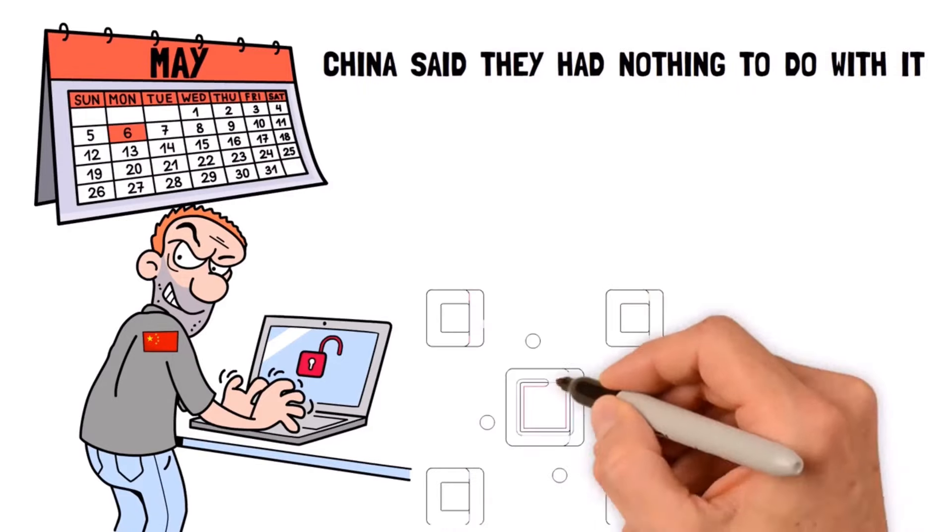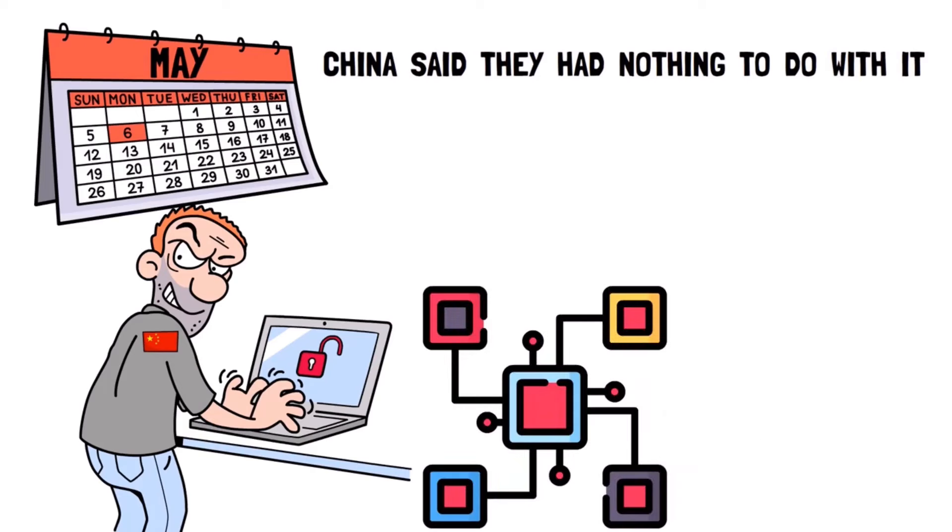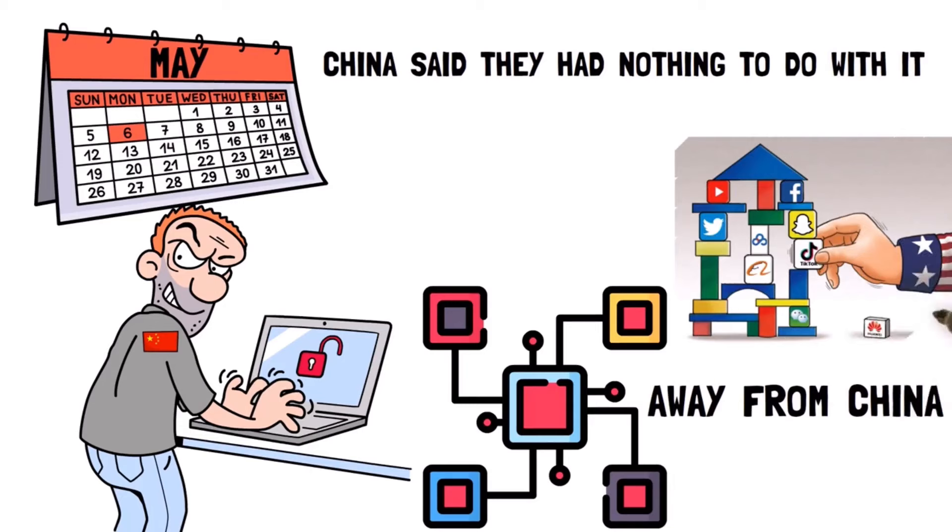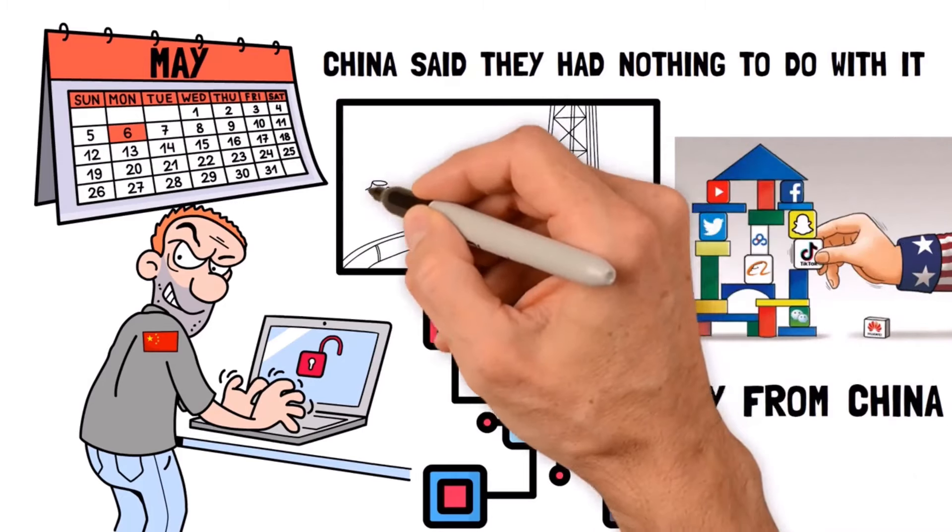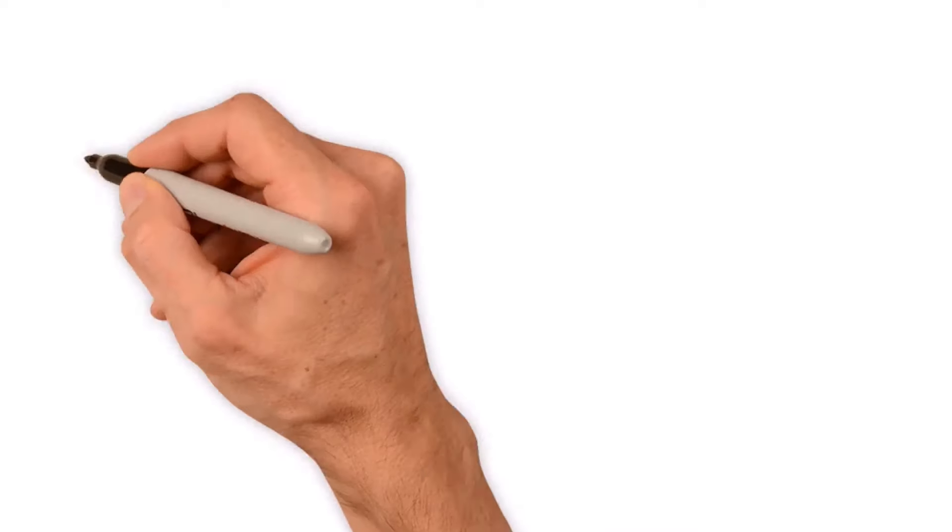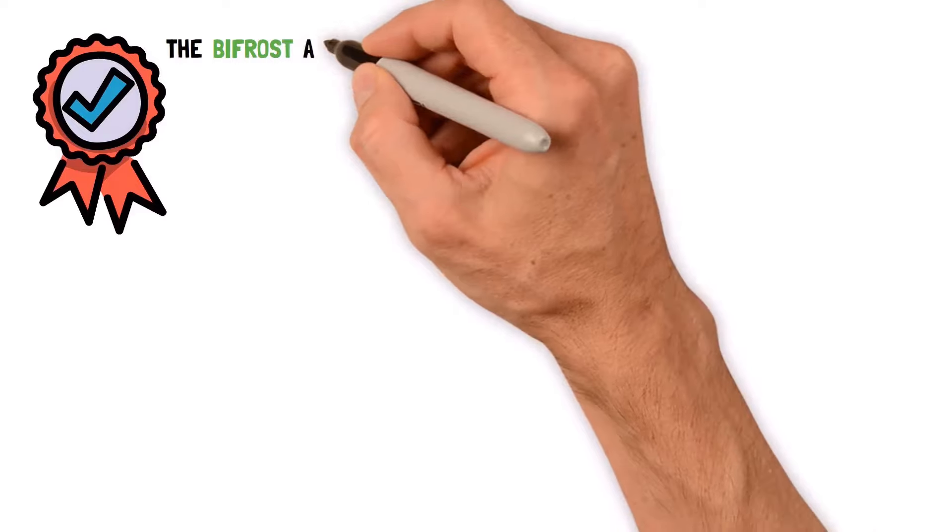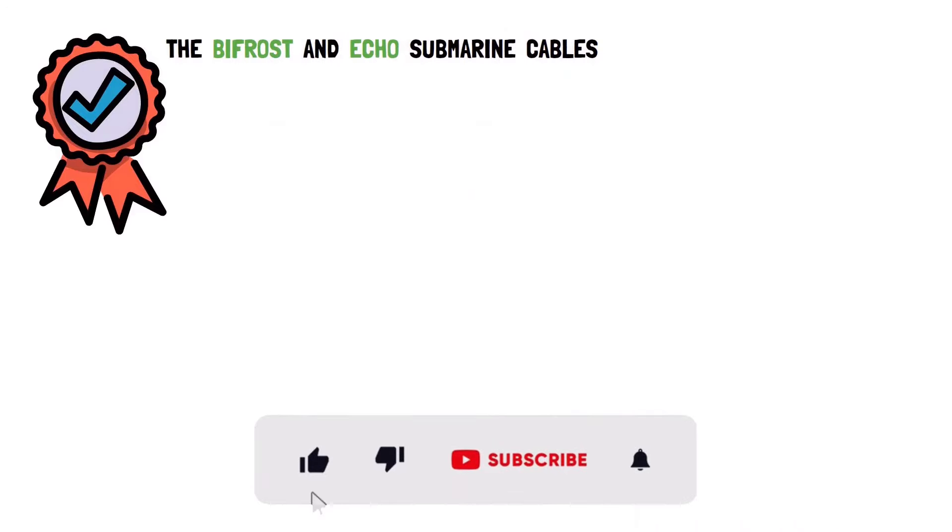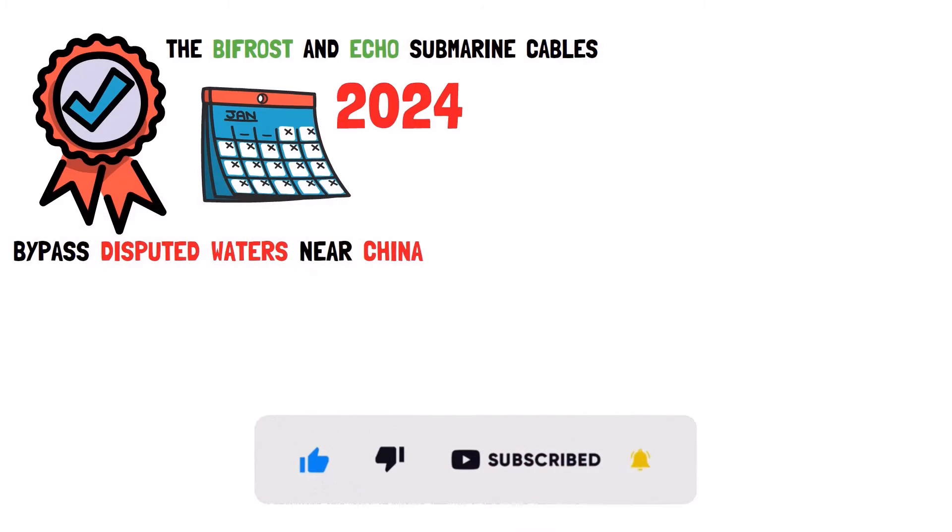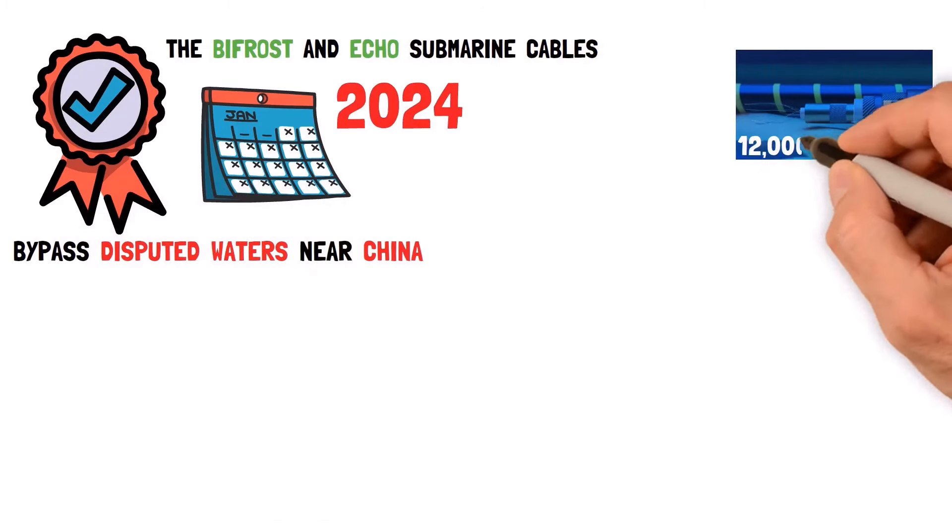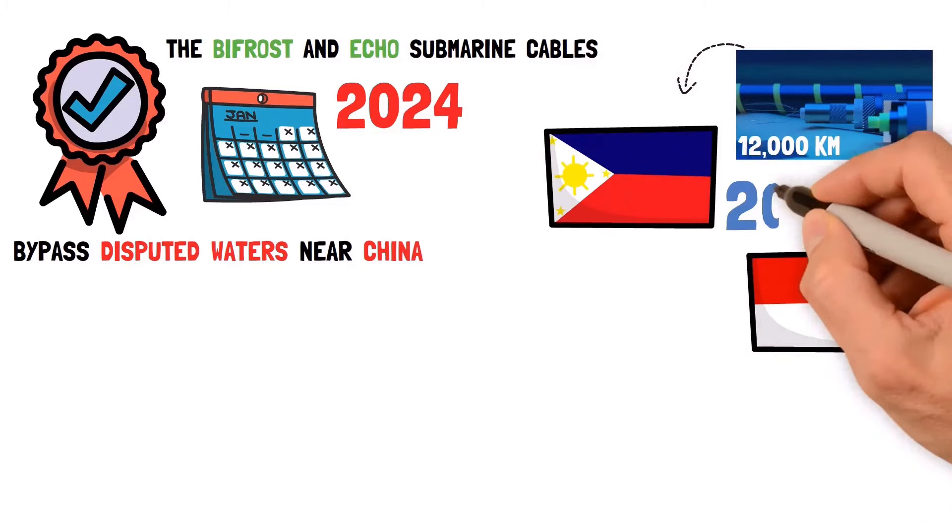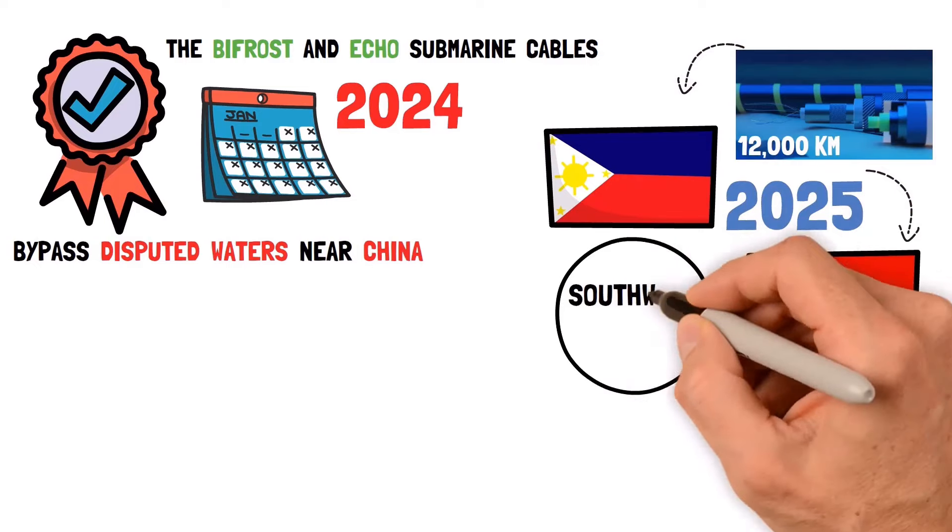Because of things like this, the US wants to keep new cables far away from China. They started something called the Clean Network Initiative in 2020, which basically says that cables shouldn't go directly from America to China. The results speak for themselves. The Bifrost and Echo submarine cables, scheduled to open in 2024, bypass disputed waters near China, as does the Apricot Cable, a 12,000 kilometers project connecting to the Philippines and Indonesia, due for completion in 2025 in the Southwest Pacific.